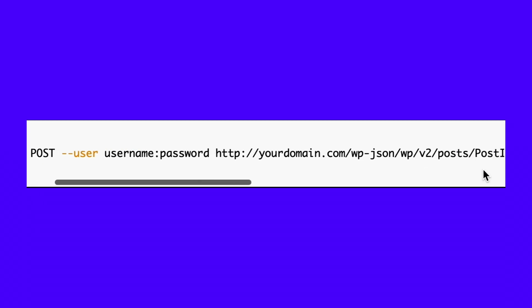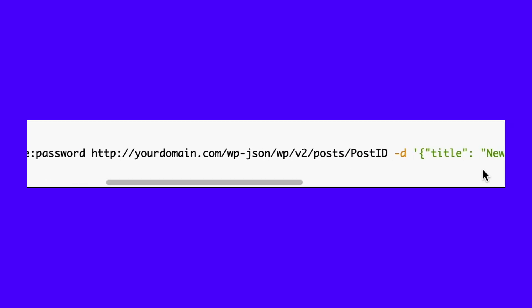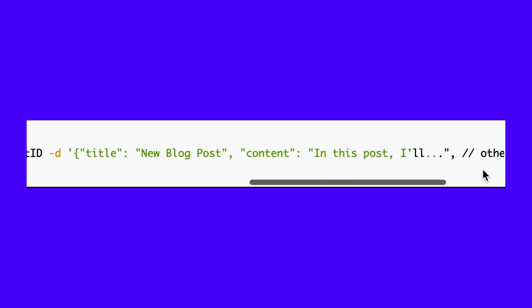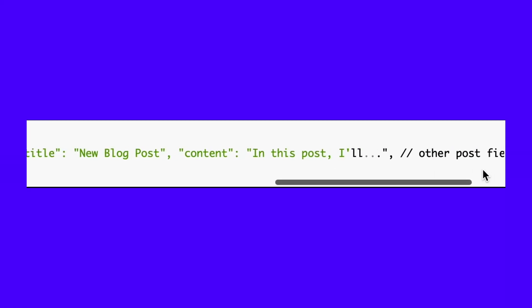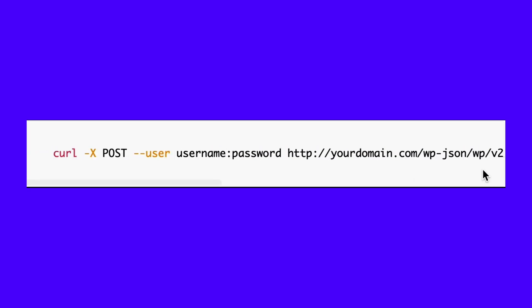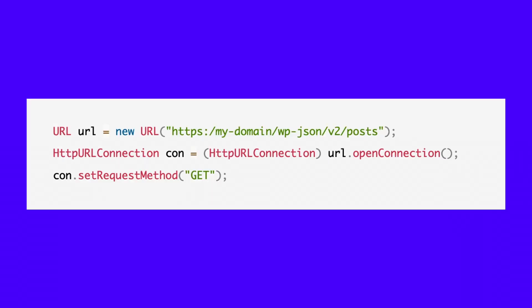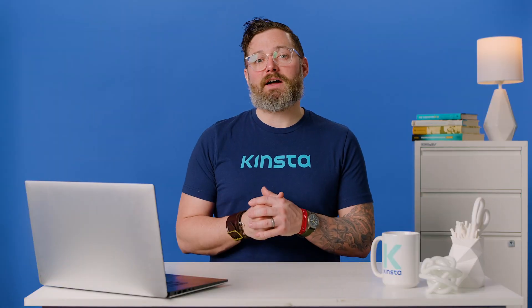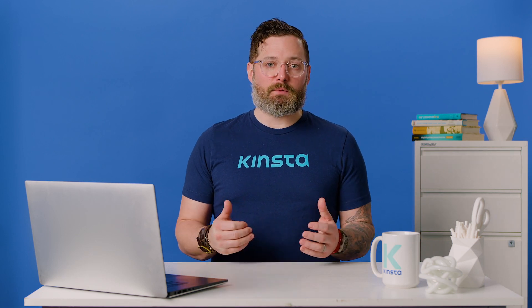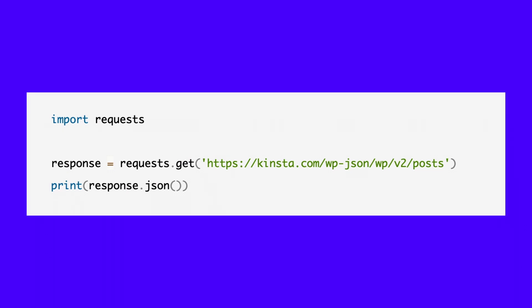You can make requests to the WordPress API from Java back-ends to either retrieve information from a WordPress site, create a new one, or update an existing one. You just need to make a request to the corresponding API endpoint. The following Java code would retrieve all of the posts from a WordPress site. You can use Python to access WordPress using the WordPress REST API. The following code gets and prints to the screen all the posts from a WordPress site that doesn't require a password-protected login.